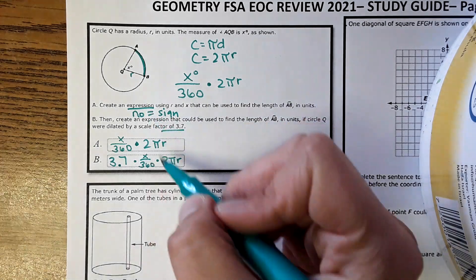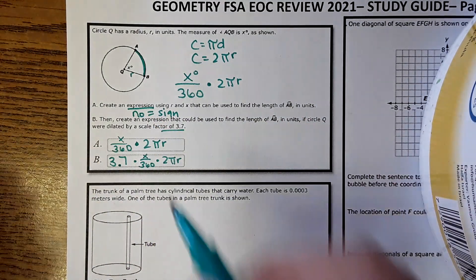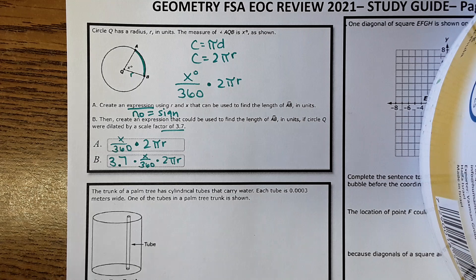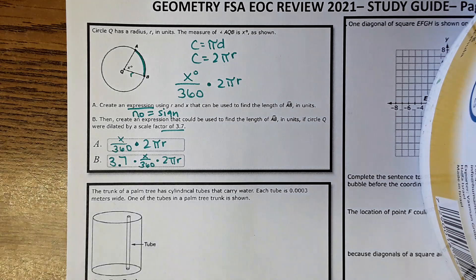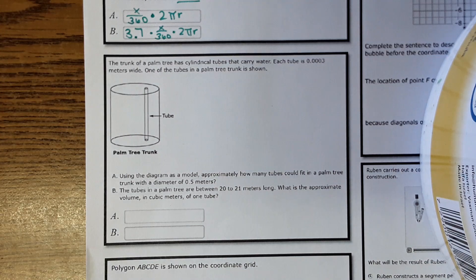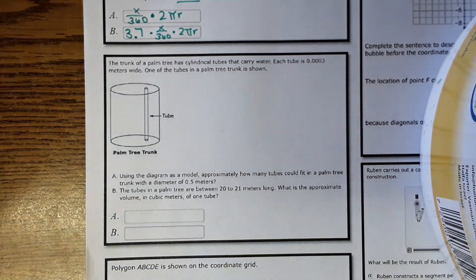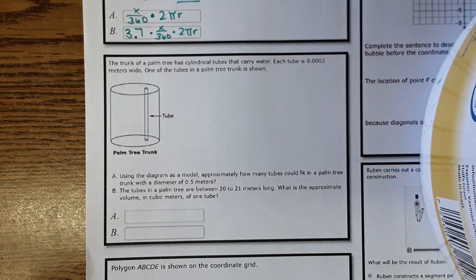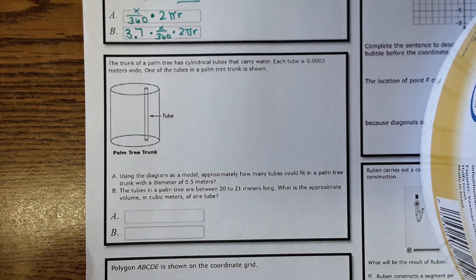And again, expression doesn't have an equal sign, so you wouldn't put it equal to anything. That's just, that's it. Okay, this one. Let's try this one again. After that last one where we, I don't know, it went poorly the last time. But, okay.